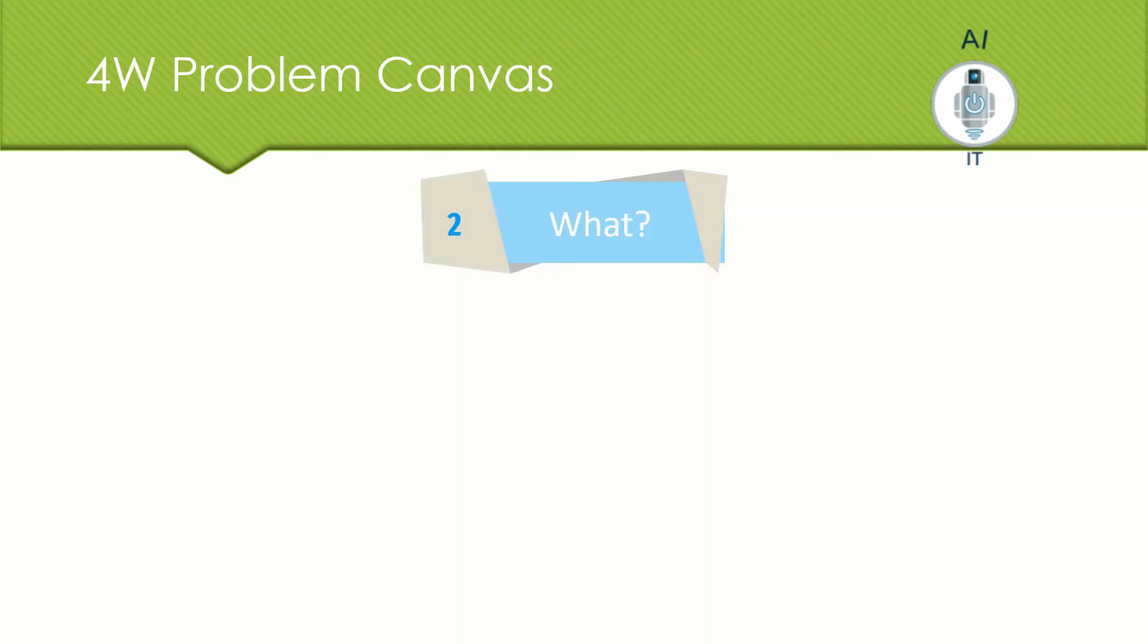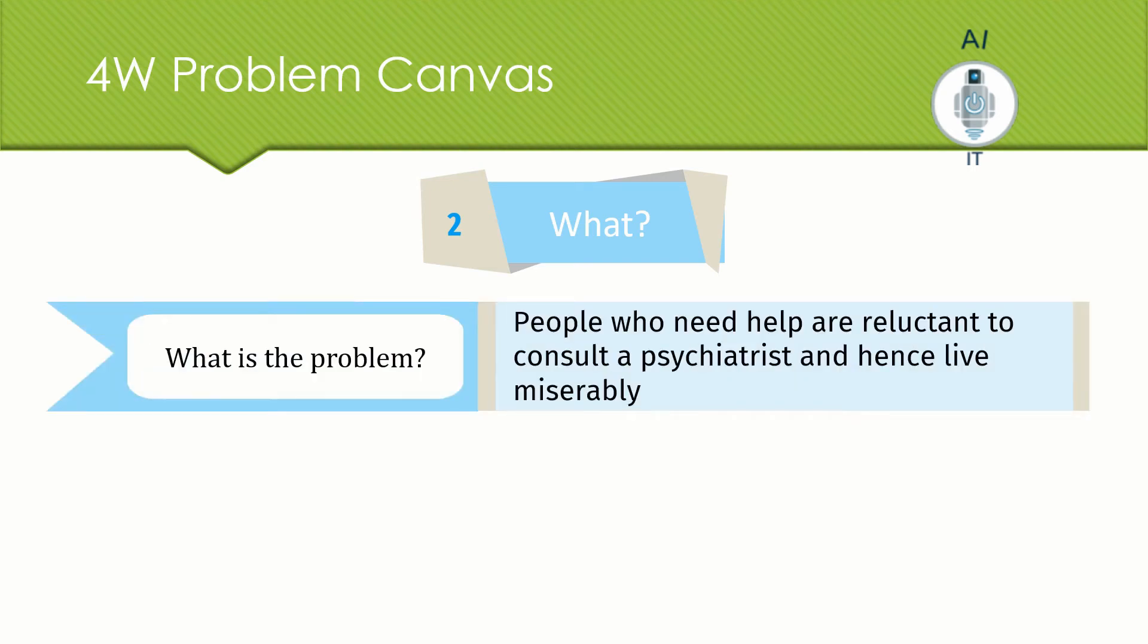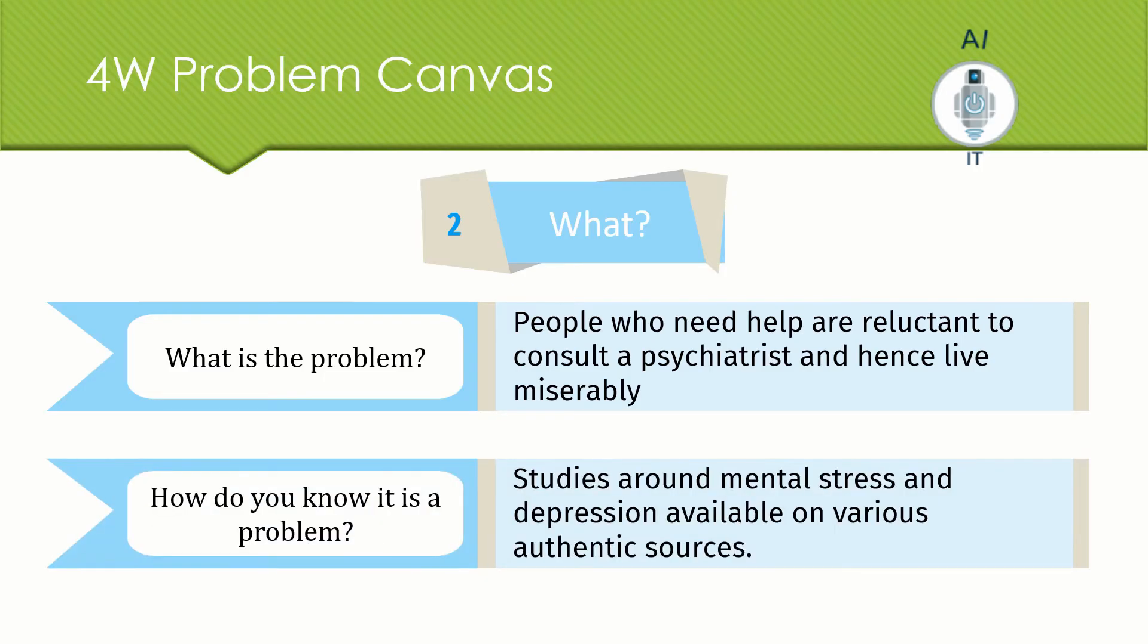Now, we look into the second block which is the WHAT block. Here, we look at the problem. What is the problem here that we want to address? That people are reluctant to go meet a psychiatrist. Hence, their life is miserable because they are in a heavy depression or they are undergoing stress and are not able to come out of it. How did we know about the problem? There are a lot of studies that happen about mental stress and depression and this problem is one which is available on various authentic sources. This is how one comes to know about such a problem.